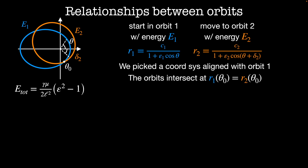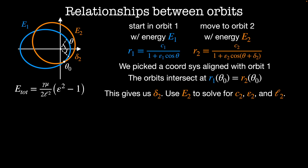These two orbits intersect at R1 of theta0 equals R2 of theta0. We can use this equation to solve for delta2, and then use the definition for E2 to solve for the constant C2, as well as the eccentricity and the angular momentum of the second orbit.